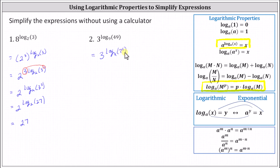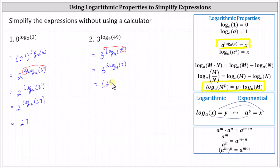Now we will apply the power property of logarithms in the opposite direction we did on the first example, where we can move the exponent of two on the seven to the position of the coefficient of the logarithm, giving us three raised to the power of two times log base nine of seven. Notice the exponent is a product. Now we'll apply the power-to-power exponent rule in the opposite direction — because the exponent is a product, we can write the expression as three squared raised to the power of log base nine of seven.